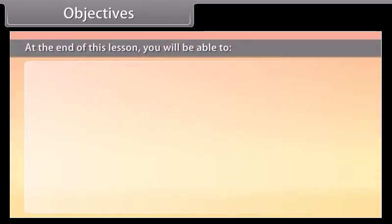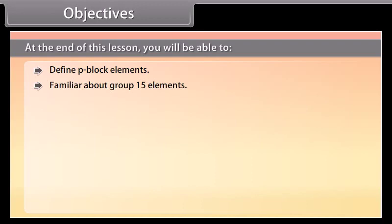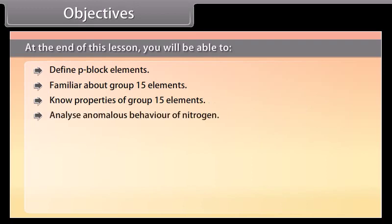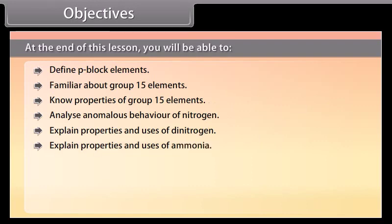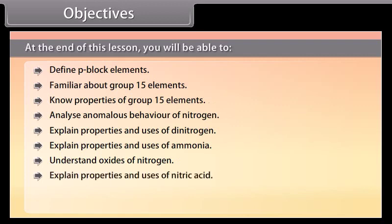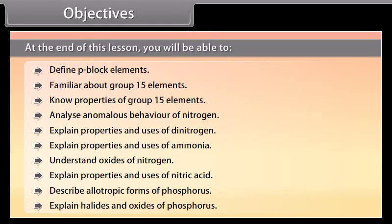At the end of this lesson, you will be able to: define P-block elements; become familiar with group 15 elements and know their properties; analyze the anomalous behavior of nitrogen; explain properties and uses of dinitrogen; explain properties and uses of ammonia; understand oxides of nitrogen; explain properties and uses of nitric acid; describe allotropic forms of phosphorus; and explain halides and oxides of phosphorus.